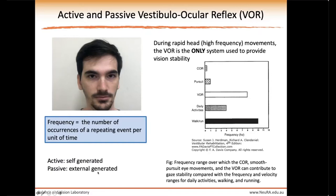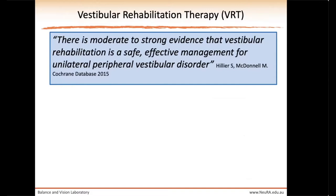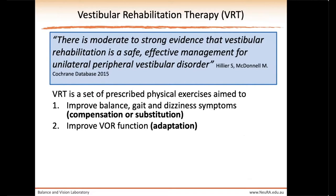In this talk I'll use the terms active and passive. Active refers to self-generated head movements, such as turning your head when crossing the road. Passive head movements are externally generated, such as your head turning while riding in a car. Vestibular rehabilitation therapy, or VRT, is a frequently used set of exercises employed by physical therapists to help people with dizziness conditions. They've been shown to be safe and effective — a prescriptive set aimed at improving balance, gait, and dizziness symptoms through compensation or substitution mechanisms.